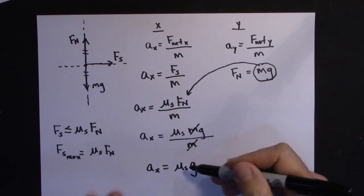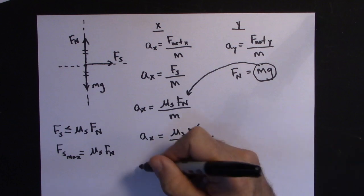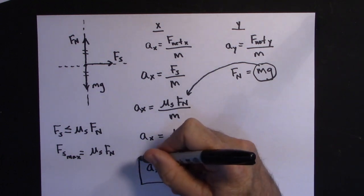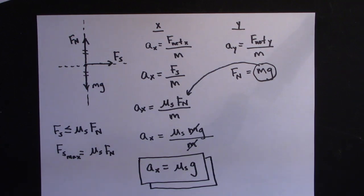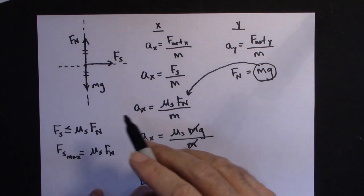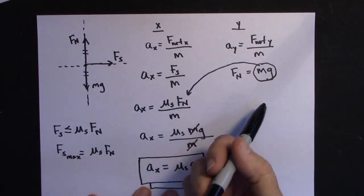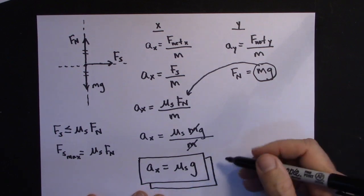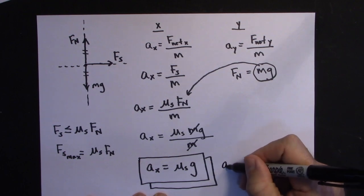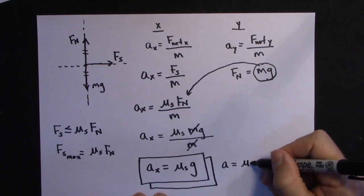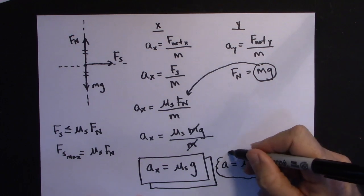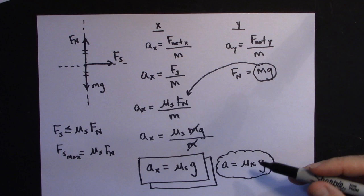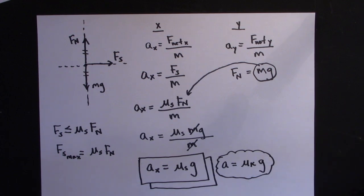The units work out since mu s is unitless and G is in meters per second squared. That's the maximum acceleration. When the box starts to slide, the crate and truck no longer have the same acceleration. The crate's acceleration once it starts sliding becomes mu k times G. Since mu k is always a little less than mu s, the crate won't accelerate as much once sliding begins.